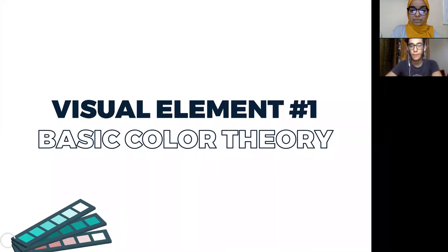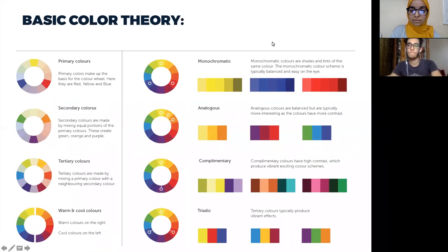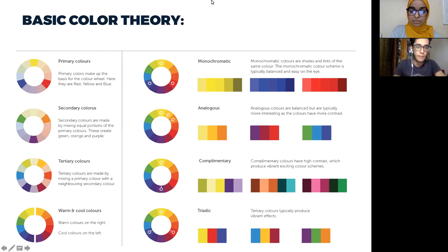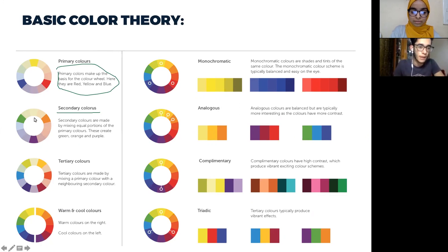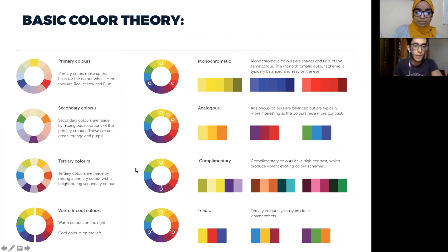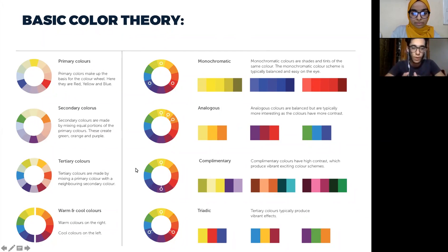Now we're going to talk about the visual elements of design. First is basic color theory — how do you choose the colors you put in your design. We have primary colors, which make up the basis of the color wheel. We also have secondary colors, made by mixing equal portions of primary colors — for example, mixing yellow with blue gives you green. We also have tertiary colors, made by mixing a primary color with a neighboring secondary color. The color wheel is also divided into warm and cool colors.